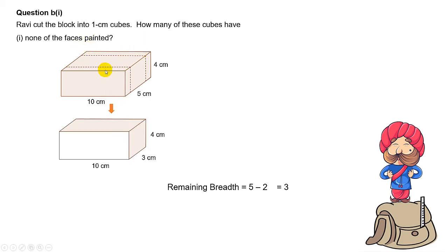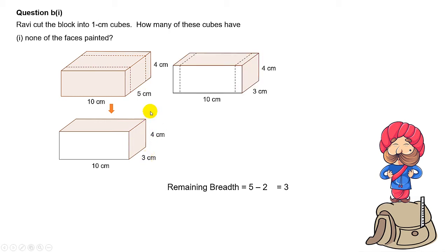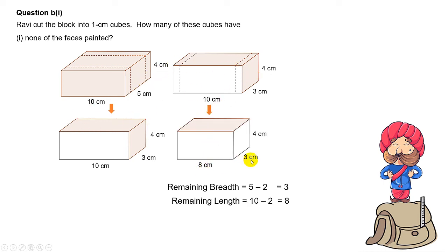After you cut away the front and the back, you are left with 10 by 3 by 4. Why is that? Because when you take 5cm minus 1cm from the front and 1cm from the back, you get 3cm. After that, you need to cut the left and right. After cutting the left and right, you will be left with 8 by 3 by 4, because 10cm minus 1 minus 1 gives you 8cm.